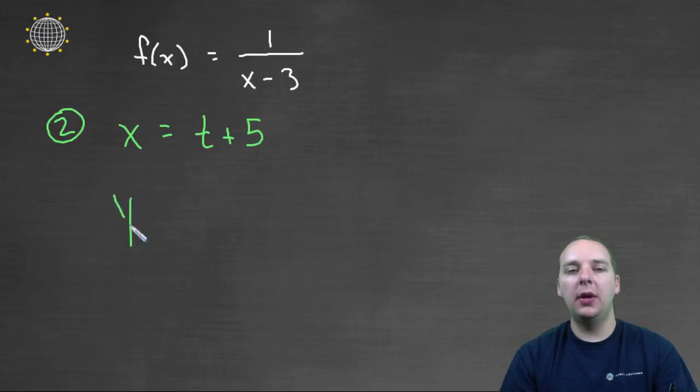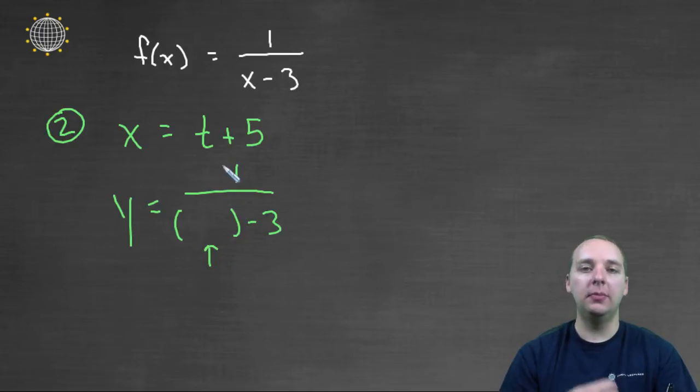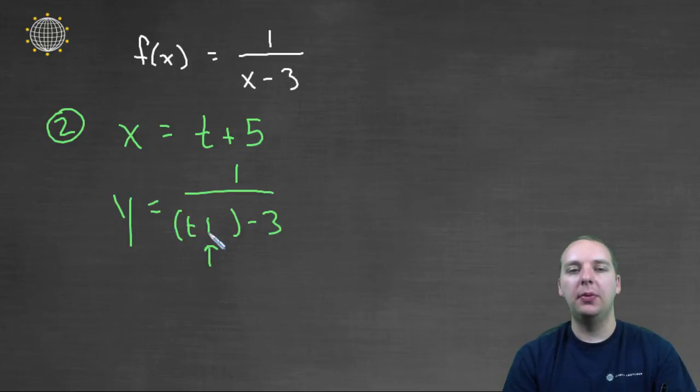Alright, then when you go to write your y, y was a function of x, so you'd have one over t plus five minus three. But instead of your x, you can take your newly parametrized version of x, in this case t plus five, and plug that in for x.